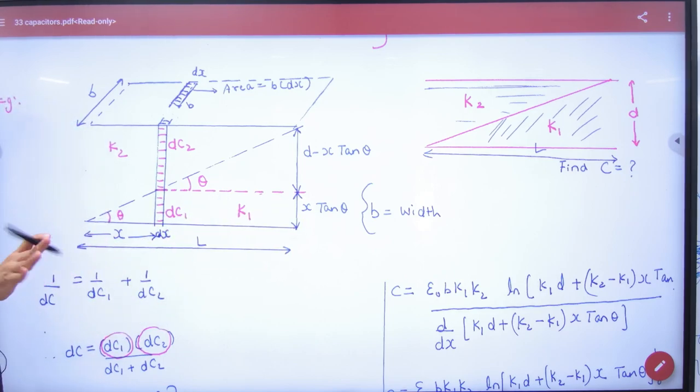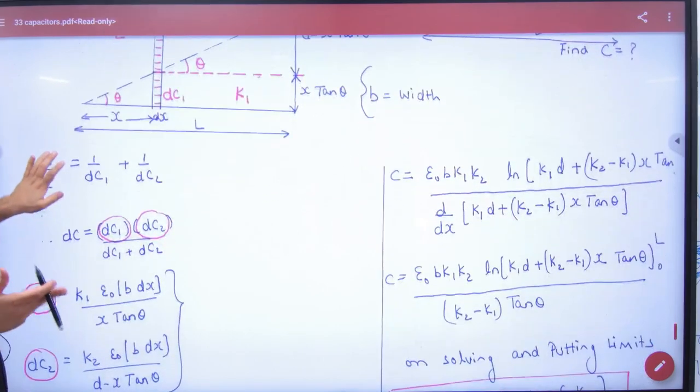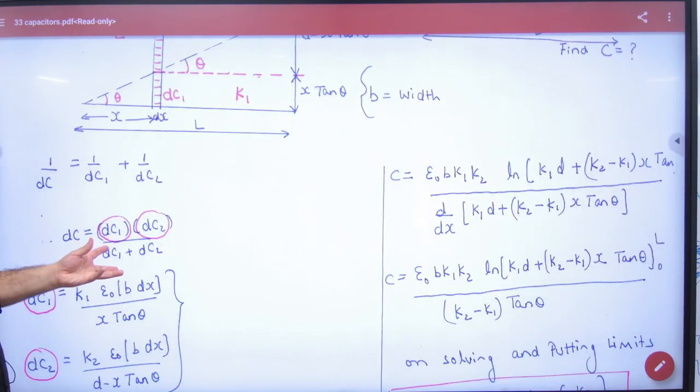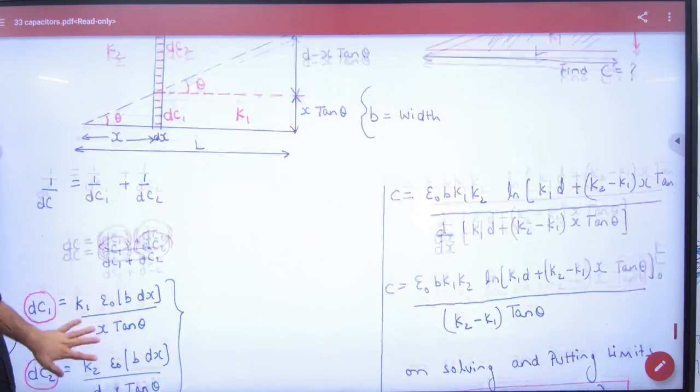And dc1 will be K1 into epsilon_0 into area again B dx and length x tan theta. Do not have to do this question. But if you do it in series, you will put in series and then integrate it.